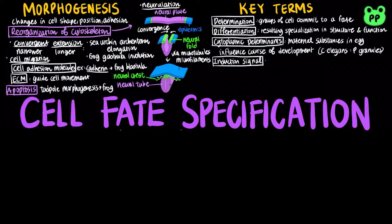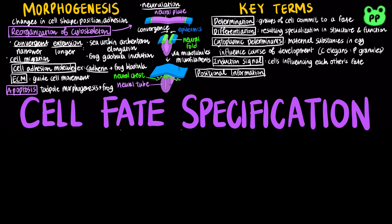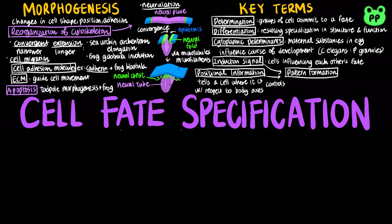Cells influence each other's fate with inductive signals. Positional information tells the cell where it is with respect to body axes. Positional information as well as induction signals regulate pattern formation, or the arrangement of organs and tissues in their characteristic spaces three-dimensionally. For example, Hox genes control pattern formation in many animals.